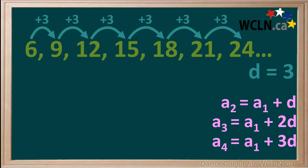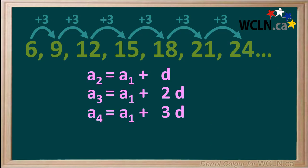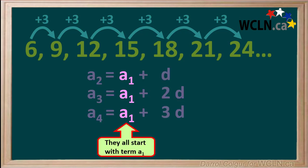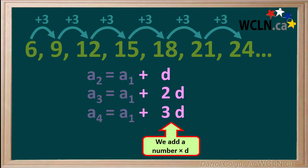Now we'll take the three equations we made and take a closer look at them and see if we can find some patterns. Notice they all start with term a1, and to all of these we add a number times d, the common difference.